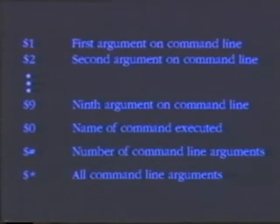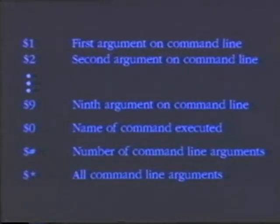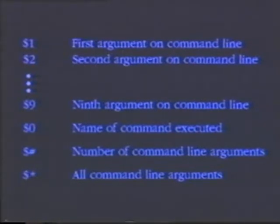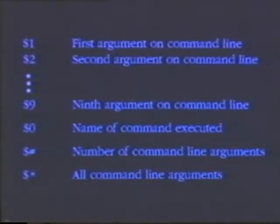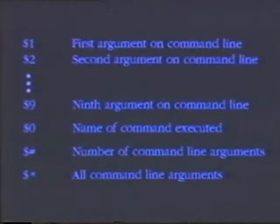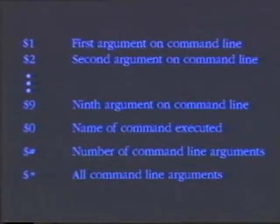The shell takes the arguments on the command line and puts them in what it calls positional parameters. Positional parameters all start with a dollar sign and are followed by a number. The first argument on the command line is stored in $1. The second argument is stored in $2, and so on. The first thing on the command line is the command you want to execute, and that's stored in the special variable $0. The shell also tells me how many arguments were on the command line in the special variable $#. In addition, all of the arguments on the command line are stored in a single variable, which is $*. You'll be using these all the time, and it's good to remember what these represent.